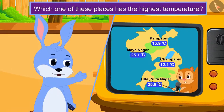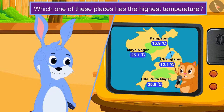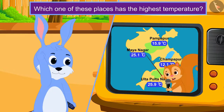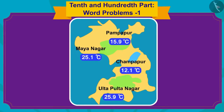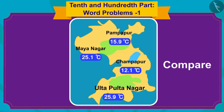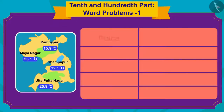Which one of these places has the highest temperature? Bunny started thinking. Children, let us help Bunny. To find the place with the highest temperature, we have to compare the temperature in degrees Celsius shown for these places. Let us look at an easy process to do this.